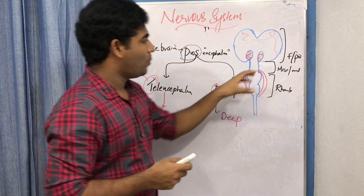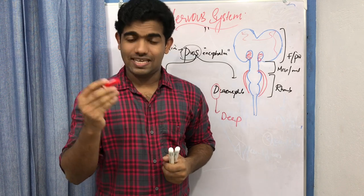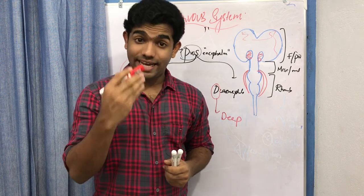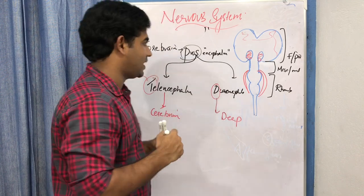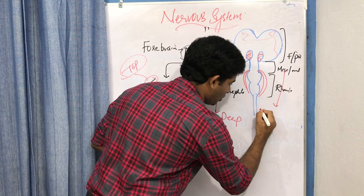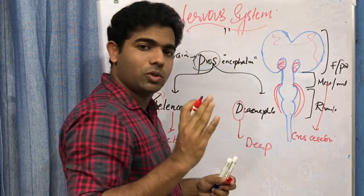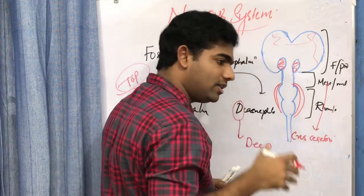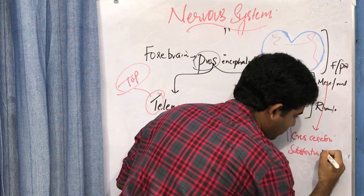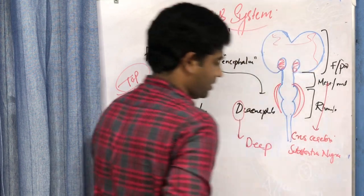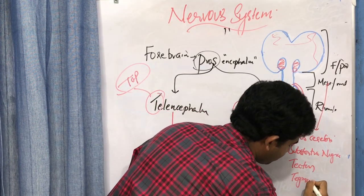The mesencephalon or midbrain is made up of the crus cerebri, the tegmentum, the tectum, and the substantia nigra. Even if you cannot remember all of these now, don't worry — once you study in depth you will remember. For now, just note that these structures belong to the midbrain.